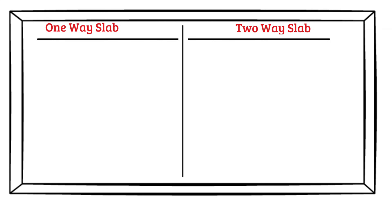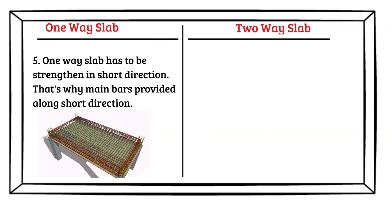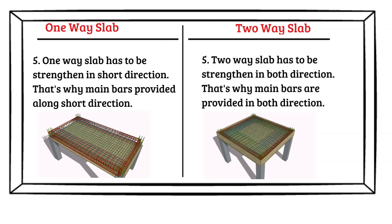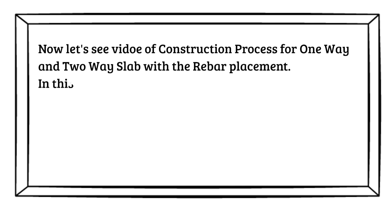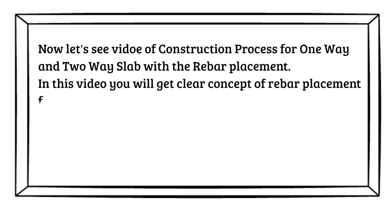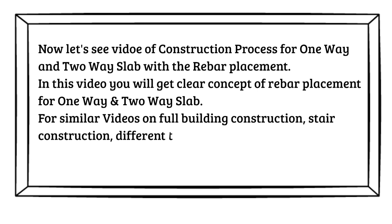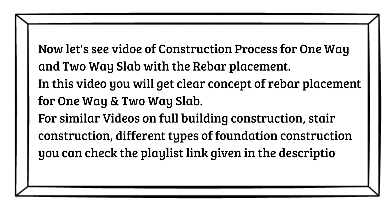Difference number five: a one-way slab has to be strengthened in the short direction, which is why main bars are provided along the short direction. A two-way slab has to be strengthened in both directions, so main bars are provided in both directions. Now let's see a video of the construction process for one-way slab and two-way slab with rebar placement. This video will give a clear concept of rebar placement for both slab types. For similar videos on full building construction, stair construction, and different types of foundation construction, check the playlist link in the description.